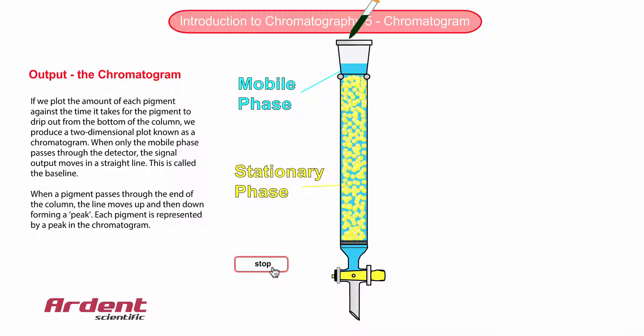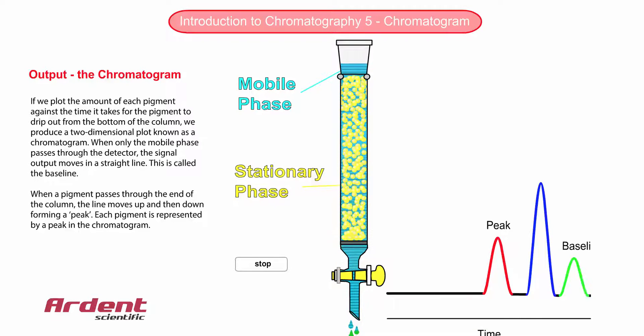If we plot the amount of each pigment against the time it takes for the pigment to drip out of the end of the column, we produce a two-dimensional plot known as a chromatogram. When only the mobile phase is dripping out of the column, the signal will be a flat line, and we call this the baseline.